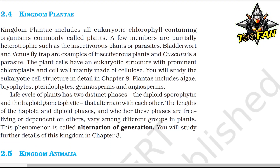Kingdom Plantae includes all eukaryotic chlorophyll-containing organisms, commonly called plants. A few members are partially heterotrophic, such as insectivorous plants or parasites — bladderworts and Venus flytraps are examples of insectivorous plants, and Cuscuta is a parasite. Plant cells have eukaryotic structures with prominent chloroplasts and cell walls mainly made of cellulose. Plantae includes algae, bryophytes, pteridophytes, gymnosperms, and angiosperms. The life cycle of plants has two distinct phases — the diploid sporophytic and haploid gametophytic — that alternate with each other. This phenomenon is called alternation of generations.